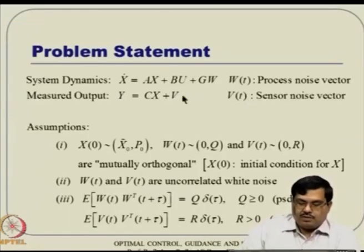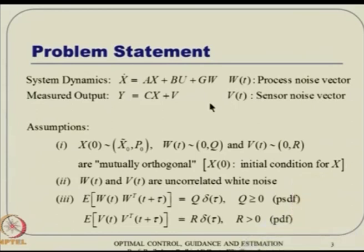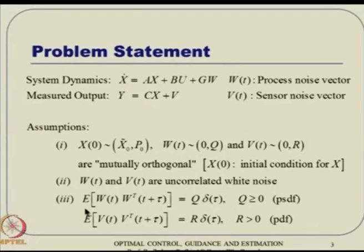The system dynamics we consider is: x_dot = Ax + Bu + Gw, y = Cx + v, where w and v are continuous time process and sensor noises respectively. We also had assumptions that initial conditions are described by a mean value and associated covariance matrix, and that w and v are uncorrelated white noise and mutually orthogonal. All of x_0, w, and v are mutually orthogonal.